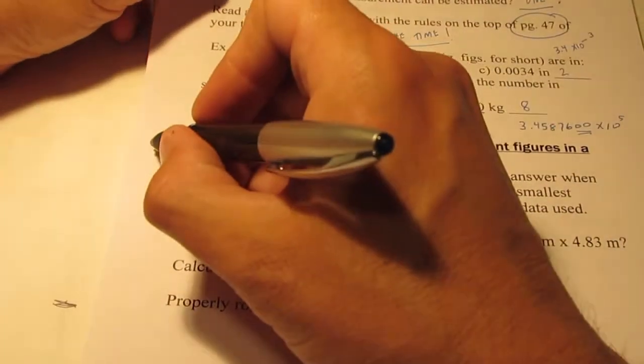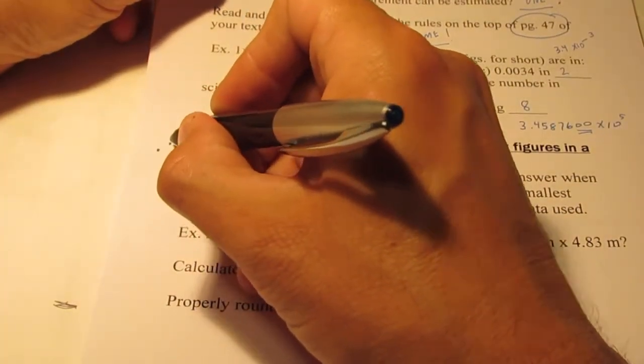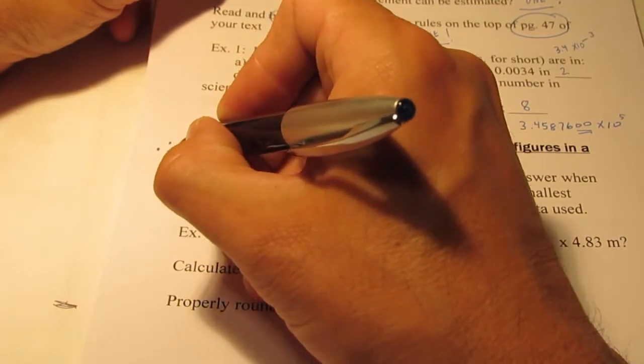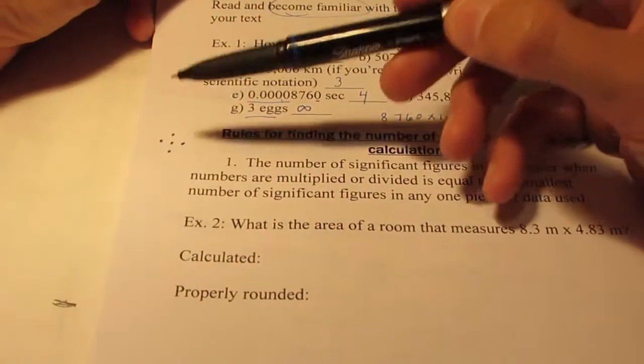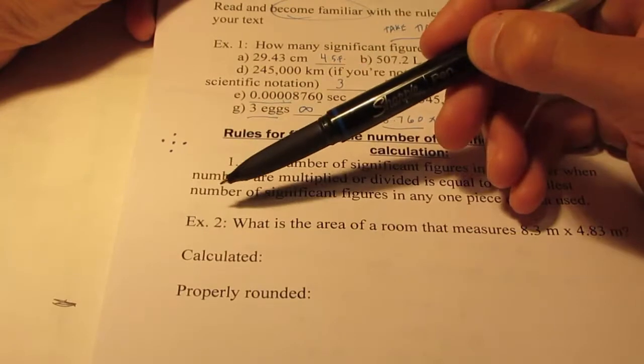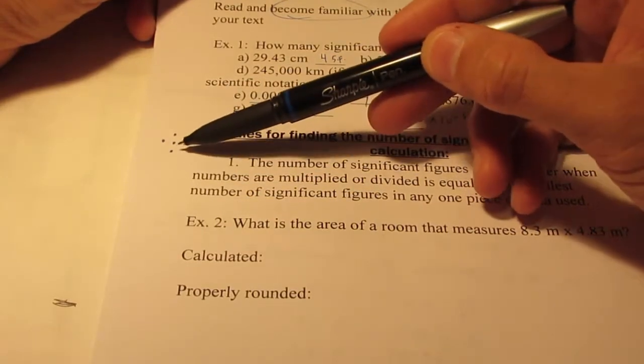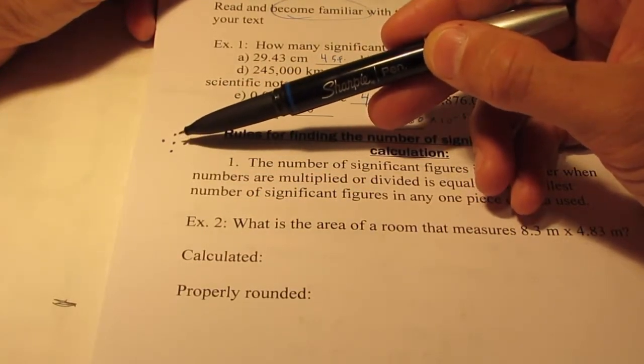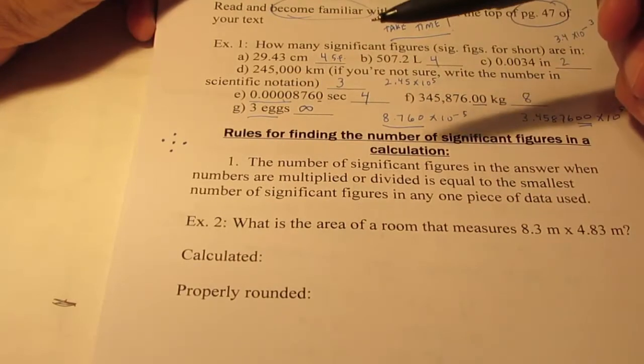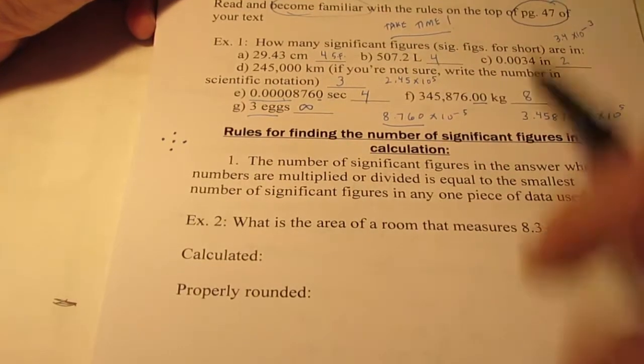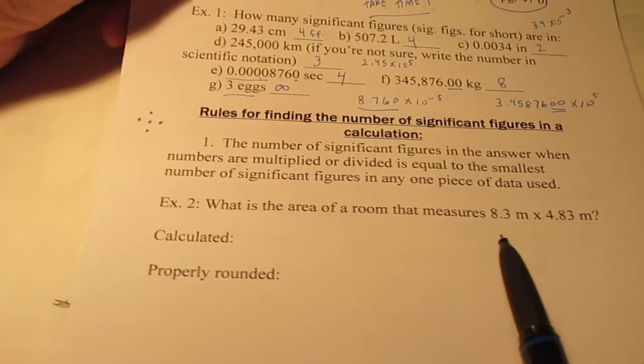So if I said that there are five dots here, I'm not measuring those dots, I'm counting them. And those five dots, if I were counting them and say, hey, there are five dots there, there would be an infinite number of sig figs there. Okay, so counted numbers are not measured quantities.